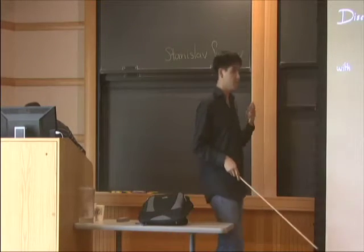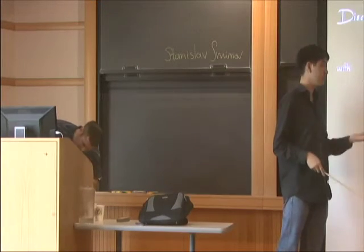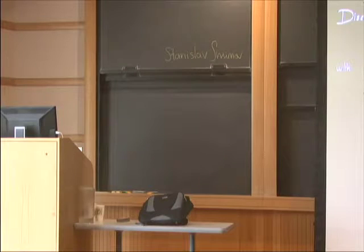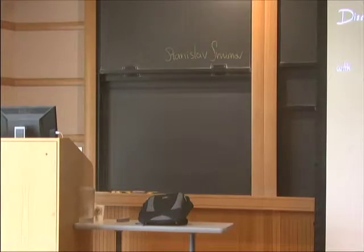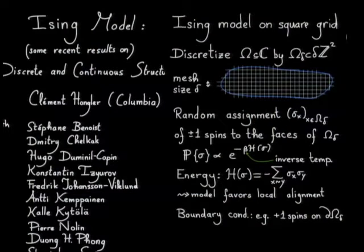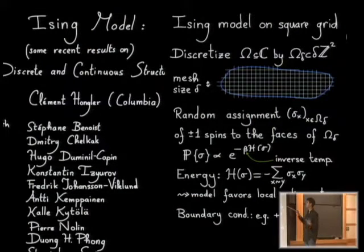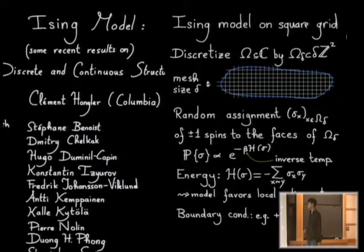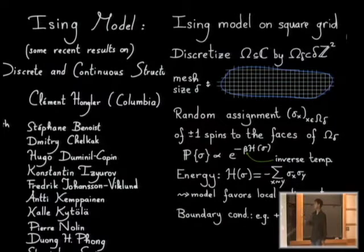I'll speak about the Ising model in two dimensions. The Ising model is a random assignment of spins to the vertices of a graph. I'm going to look at two-dimensional graphs, specifically square grids. I'll look at finite subsets of the square grid — more precisely, discretizations by the square grid of planar domains. You take your favorite domain and discretize it by a square grid of mesh size delta, where delta is the size of a little square. The Ising model assigns plus or minus one spins on the faces of this graph.